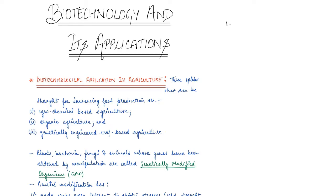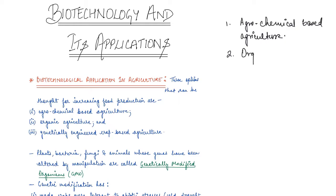The first option is agrochemical-based agriculture — the chemical-based agriculture. The second possible option is organic agriculture. And the third one is genetically engineered crop-based agriculture.